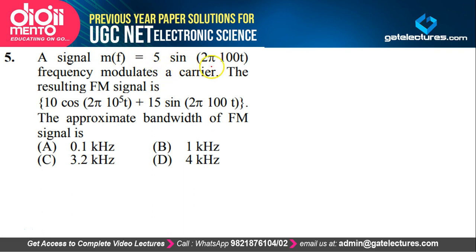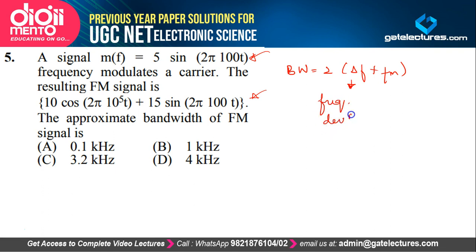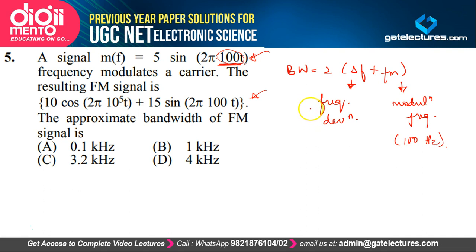A signal MF = 5 sin(2π × 100 × T) frequency modulates a carrier, and they are asking for the approximate bandwidth. The bandwidth of an FM signal is given by BW = 2 × (ΔF + FM), where ΔF is frequency deviation and FM is modulation frequency. The modulation frequency is 100 Hz (from 2πFT comparison). To find ΔF, we use the modulation index mu = ΔF / FM.